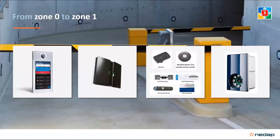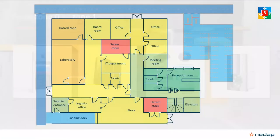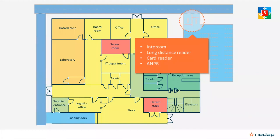Looking at the poll results, ANPR and long-range reader are tied as most popular at 31% each, followed by normal card reader and intercom. These technologies — intercom, long-range reader, card reader, and license plate reader — are applied at the zone 0 to zone 1 transition on the floor plan.